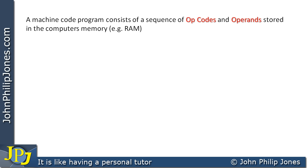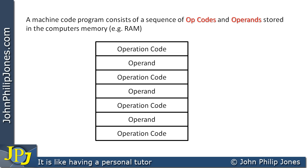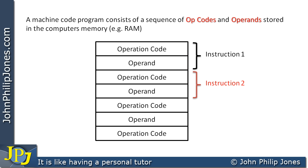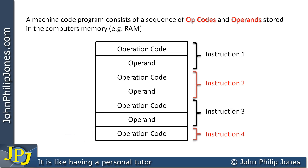A machine code program consists of a sequence of opcodes and operands stored in the computer's memory, for example in random access memory (RAM). Looking at what's stored in RAM, we can see instruction 1 has an operation code immediately followed by an operand. Instruction 2 and 3 also have an opcode followed by an operand, whereas instruction 4 just has an operation code with no operand stored in memory.